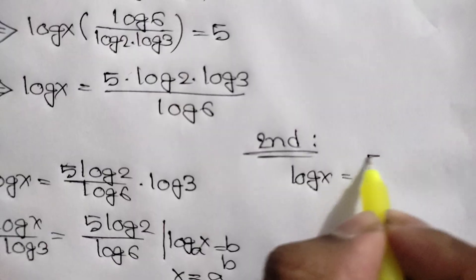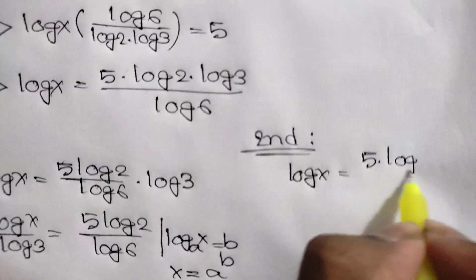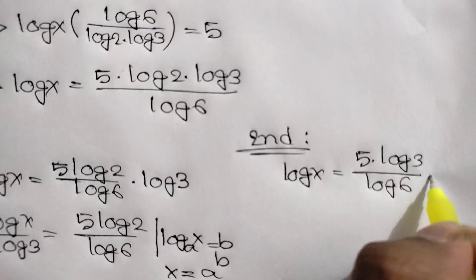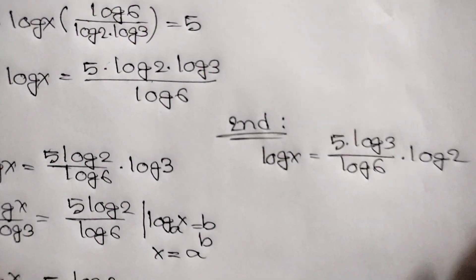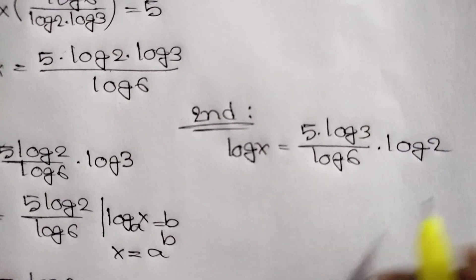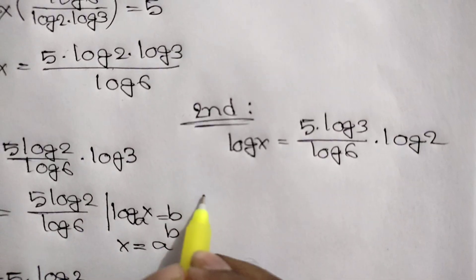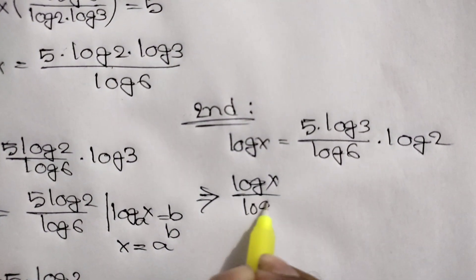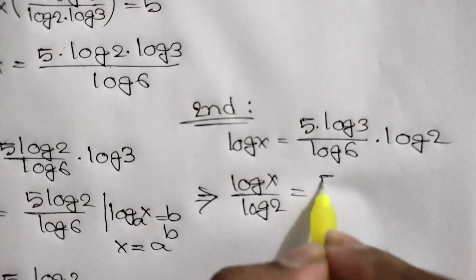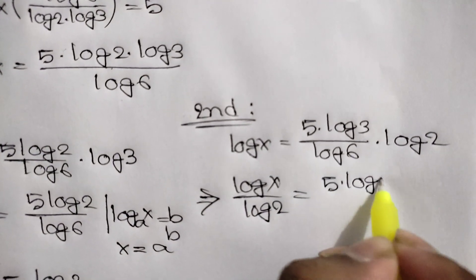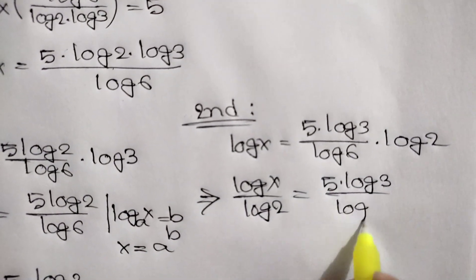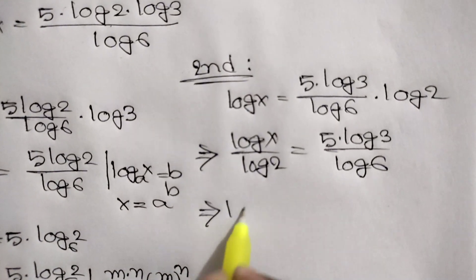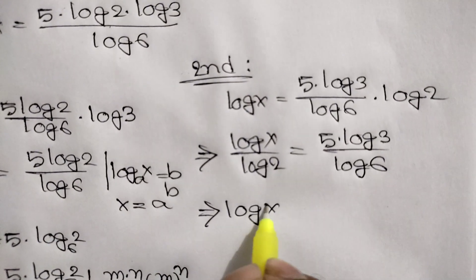For the second way, we can write log of x is equal to 5 times log of 3 over log of 6 times log of 2. Taking log of 2 to the left side, we get log of x over log of 2 is equal to 5 times log of 3 over log of 6, which gives us log of x base 2 is equal to 5 times log of 3 base 6.